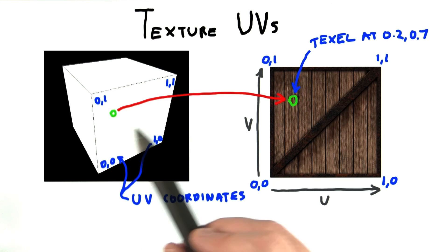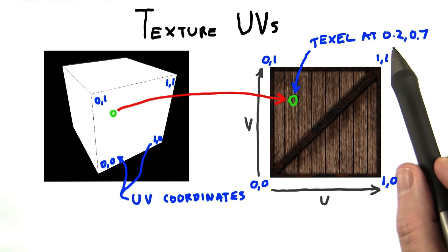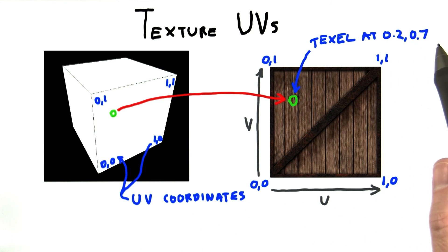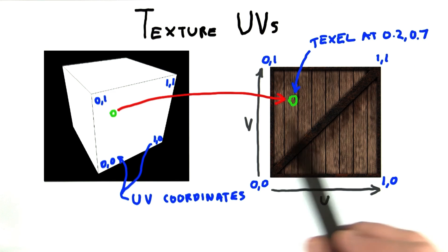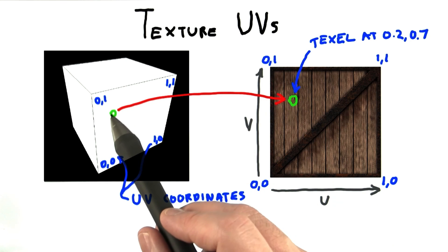At this pixel, the UV coordinate turns out to be u equal to 0.2, v equal to 0.7. Using these two values like coordinates on a map, we can look up the texel in the image and use this to modify the color of the surface.